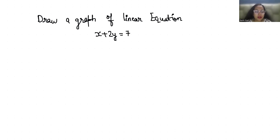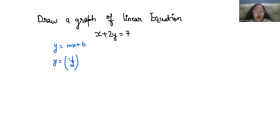So x plus 2y equals 7. First we check that this linear equation is in the form of y equals mx plus b, so we will convert it in terms of y. When we calculate y, it becomes minus 1 over 2 times x plus 7 over 2.